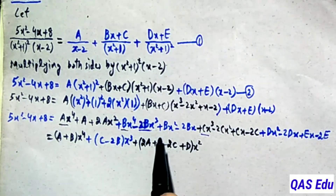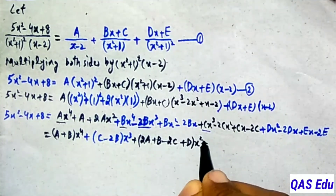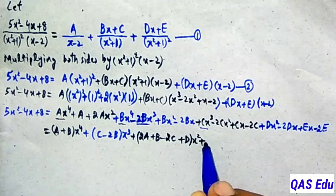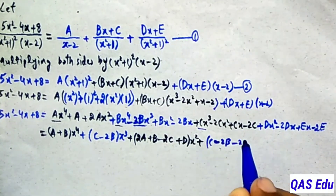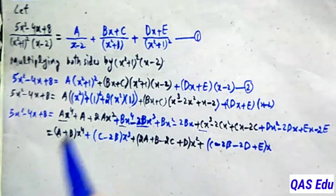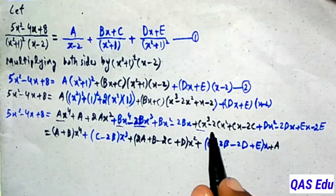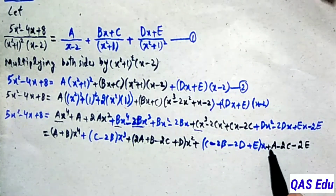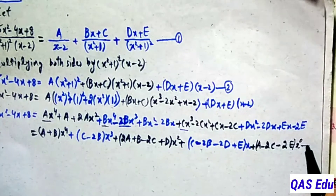For x terms: minus 2B plus C minus 2D plus E times x. For the constant term (x power 0): minus 2C minus 2E. So equation number 3 is formed by collecting all these terms. We have five unknowns — A, B, C, D, E — and we will use equation number 3 to find them by comparing coefficients.